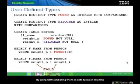By using UDTs and using them as data types for columns, you would be enforcing the rules so that such comparisons are not allowed.